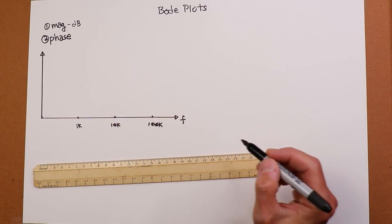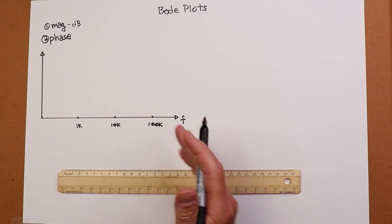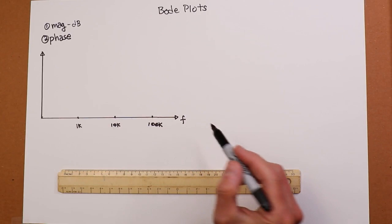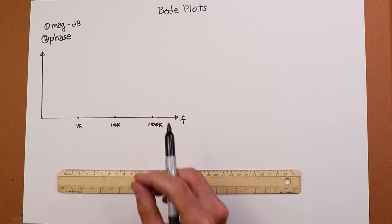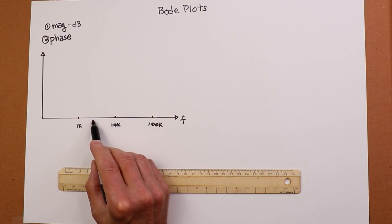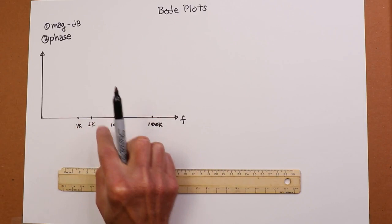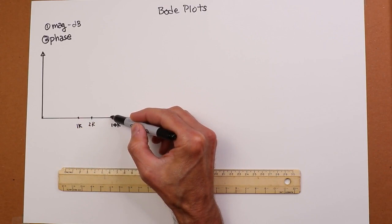So where are the intermediate values? Where is 5k on here, or where is 2k? Well, any factor of 2 would have to be the same distance. So the log of 2 is about 0.3. In other words, we need to be about 30% over. Somewhere around here would be 2k. And if we took that same spread and we replicated it, we'd be at 4k and then at 8k.